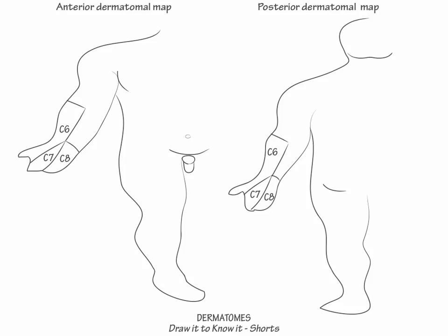Next show that C5 covers the upper lateral arm, then show that T1 covers the medial forearm, and T2 the medial upper arm.